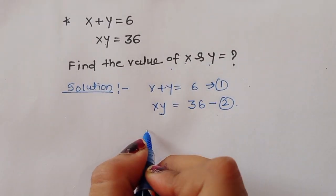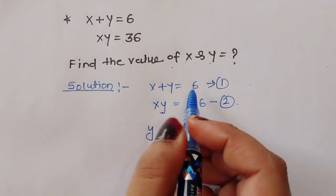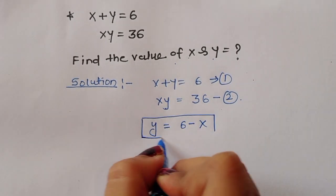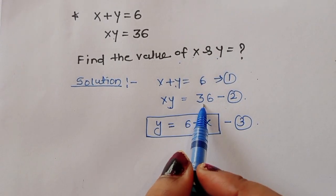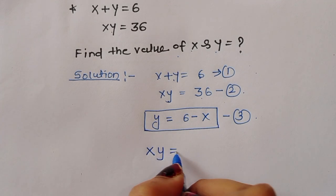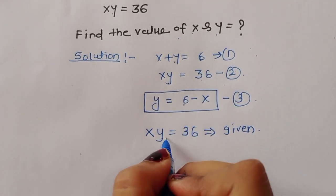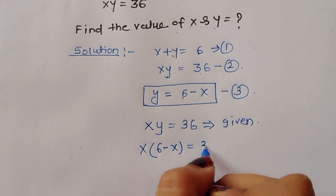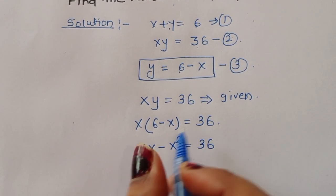Now we can find out the value of y. From equation 1, y is equal to 6 minus x — this is equation 3. Now substituting into equation 2: x times y equals 36, so we substitute y with 6 minus x, giving x times (6 minus x) equals 36.